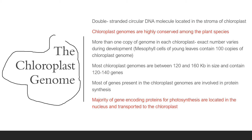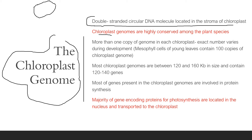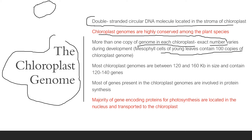The second type of genome is the chloroplast genome. The chloroplast genome is a double-stranded circular DNA molecule located in the stroma of the chloroplast. Chloroplast genomes are highly conserved among plant species. More than one copy of the genome exists in each chloroplast — the exact number varies during development — and mesophyll cells of young leaves contain about 100 copies of chloroplast genomes.